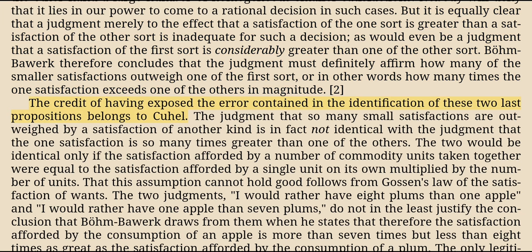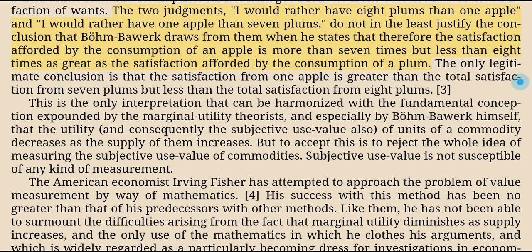The credit of having exposed the error contained in the identification of these two last propositions belongs to Kühle. The judgment that so many small satisfactions are outweighed by a satisfaction of another kind is in fact not identical with the judgment that the one satisfaction is so many times greater than one of the others. The two would be identical only if the satisfaction afforded by a number of commodity units taken together were equal to the satisfaction afforded by a single unit multiplied by the number of units. That this assumption cannot hold good follows from Gossen's law of the satisfaction of wants. The two judgments—'I would rather have eight plums than one apple' and 'I would rather have one apple than seven plums'—do not justify Böhm-Bawerk's conclusion that the satisfaction from an apple is more than seven times but less than eight times as great as that from a plum. The only legitimate conclusion is that the satisfaction from one apple is greater than the total satisfaction from seven plums but less than the total satisfaction from eight plums.